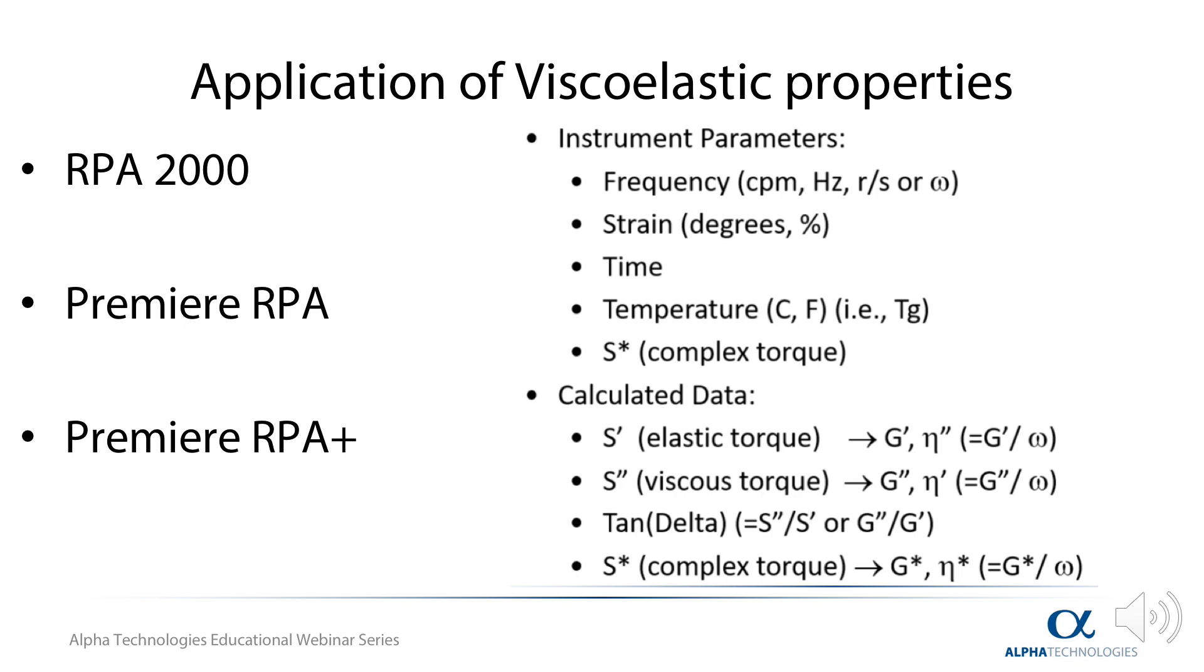In addition, we want to know the viscoelastic properties of cured materials in order to predict final product properties. The best way to measure viscoelastic properties in uncured and cured rubber compounds is to test the material with an applied sinusoidal deformation.